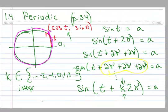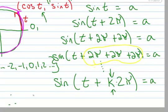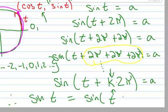So our conclusion is: the sine of T is equal to the sine of T plus k·2π. And that's an example of something being periodic. We'll talk about more of that in section 1.6 coming up.